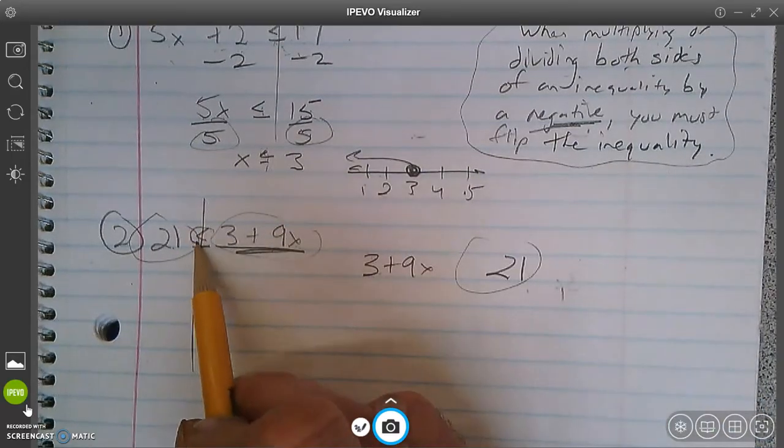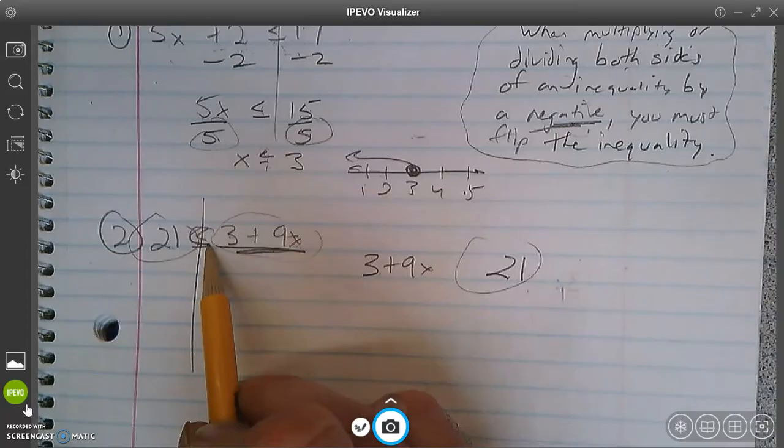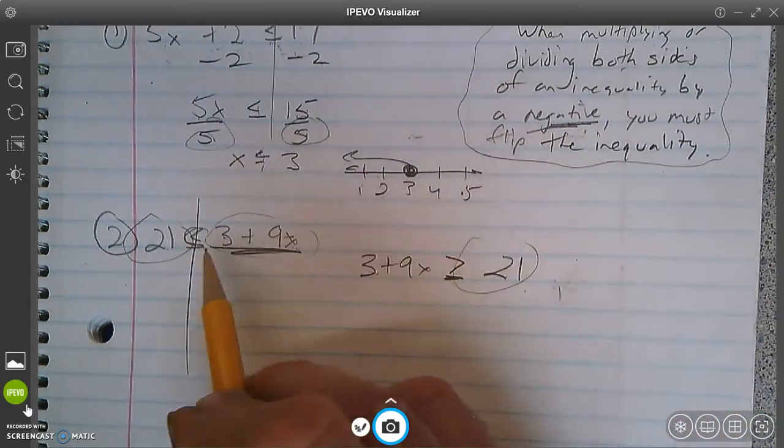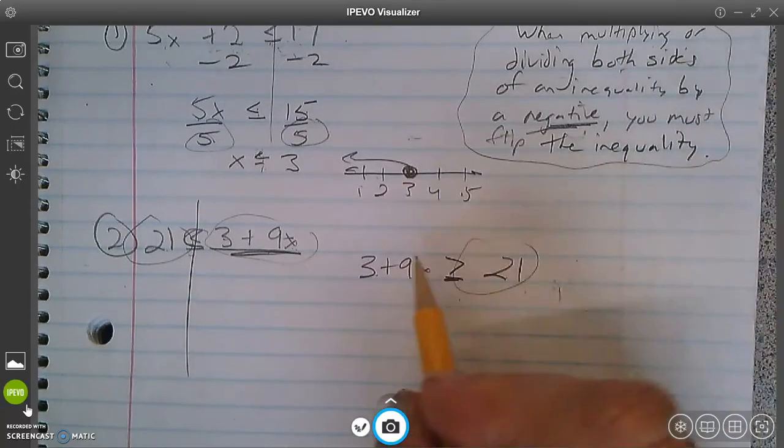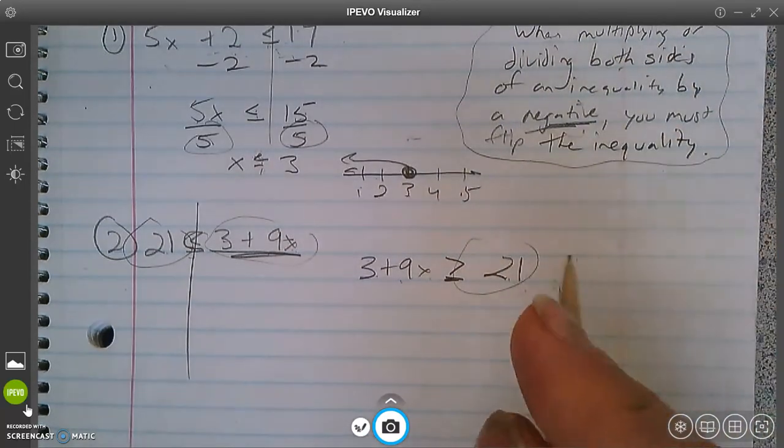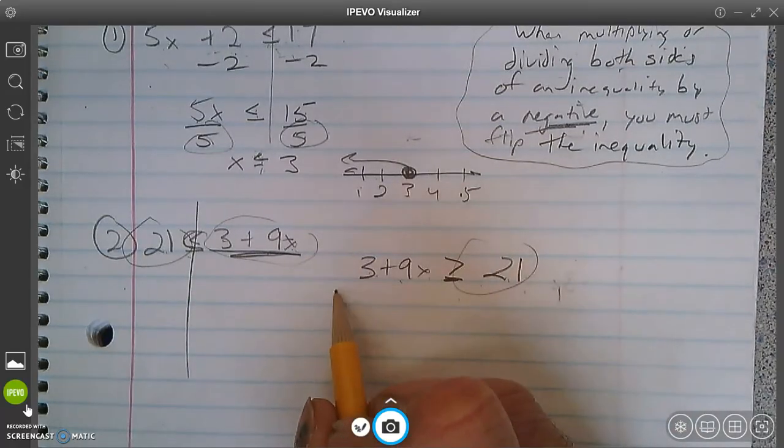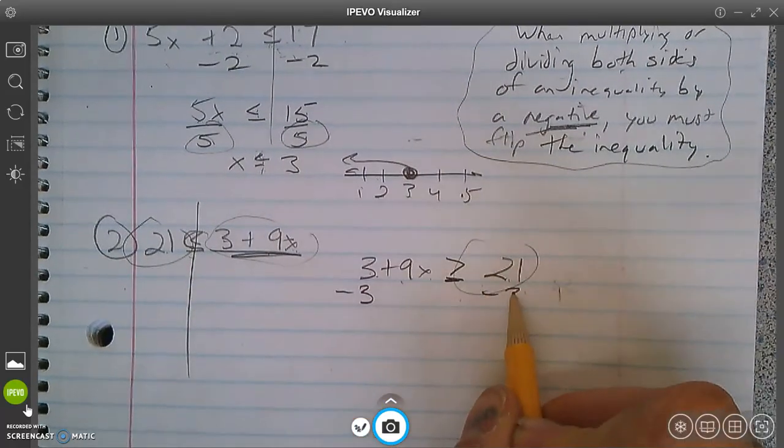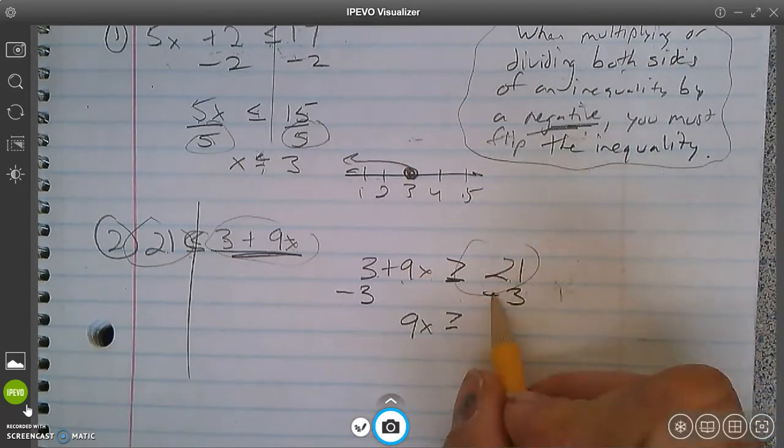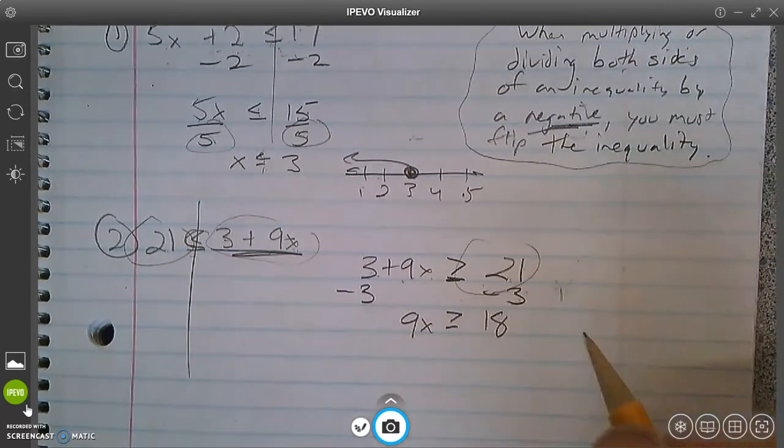Okay. So see how Pac-Man is eating the 3 plus 9x? So Pac-Man is still going to eat the 3 plus 9x. So I've got to include the equal sign too. So I just reversed it, and I got the variable on the left. That makes me feel better. So opposite of positive 3, minus 3.